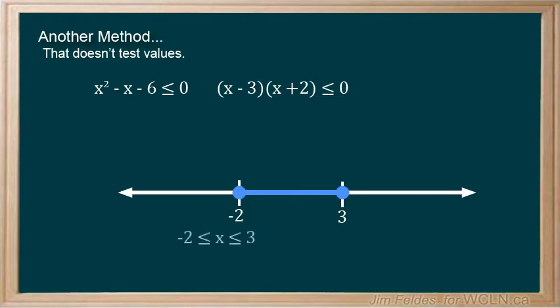As an inequality solution, we write it as x is greater than or equal to negative 2, and x is less than or equal to 3. Or, of course, in interval notation.